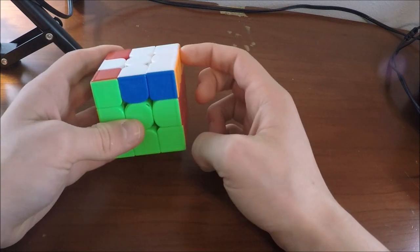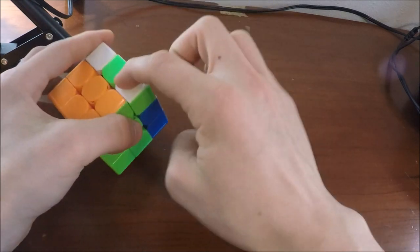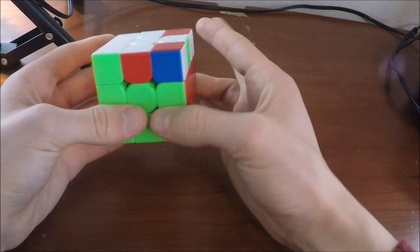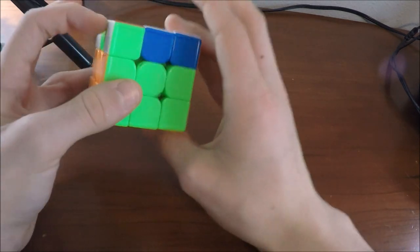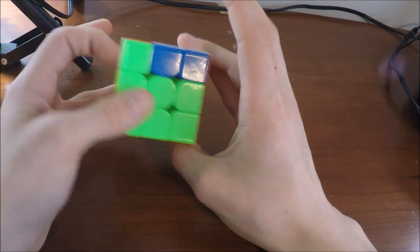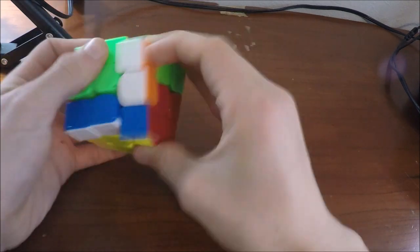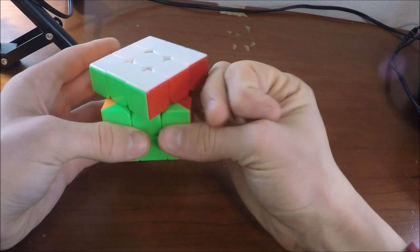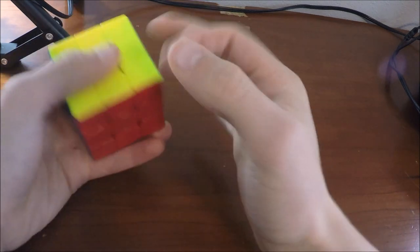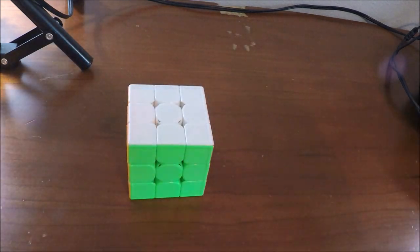But I know since I did the U2, J is actually over here now, so I would do U2 R. But it's J, but it's in the R location, which is just old Pochmann, undo the setup move, and it's solved.